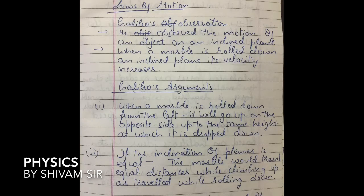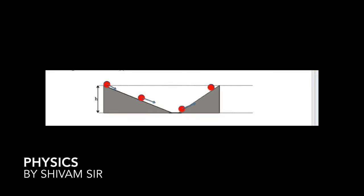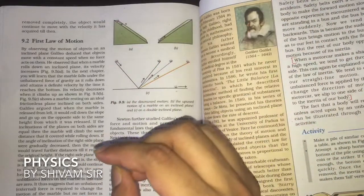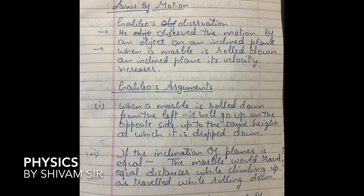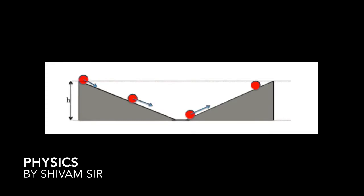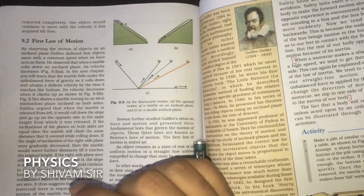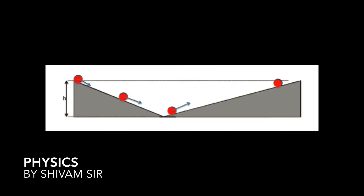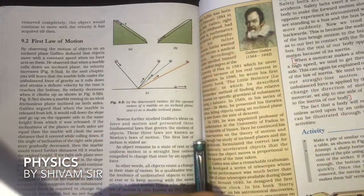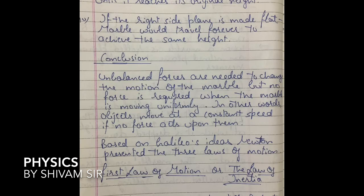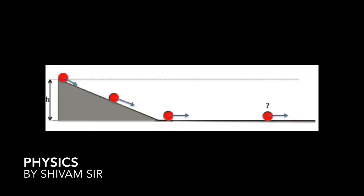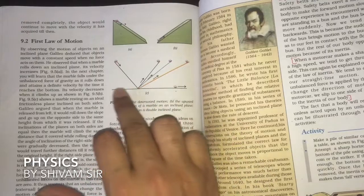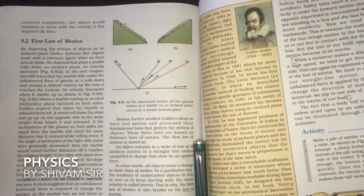Galileo's conclusions: First, a marble rolled down from the left will go up to the same height on the opposite side. Second, if inclinations are equal, the marble travels equal distances while climbing as while rolling down. Third, if the angle of the right plane is decreased, the marble travels further to achieve the same height. Fourth, if the right side is made flat, the marble travels farther forever trying to achieve the same height.